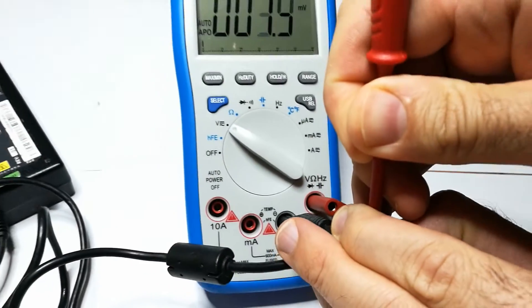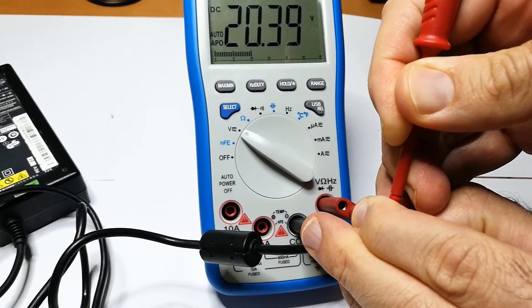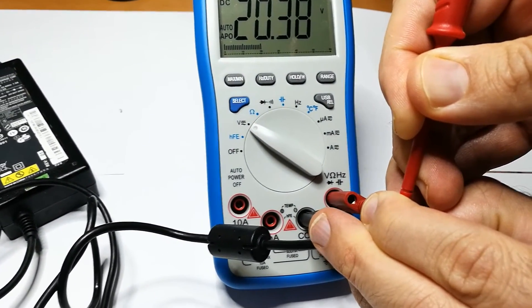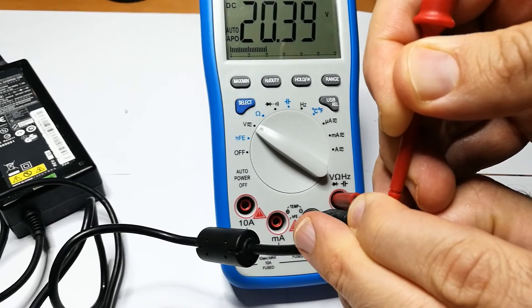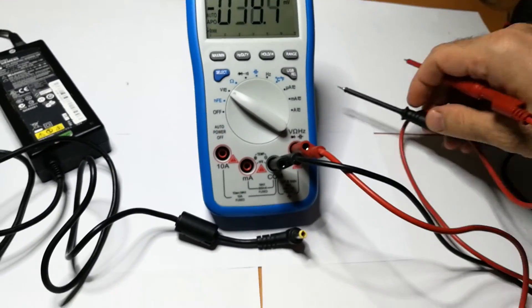Now you can measure the voltage, and as you can see there are 20.39 volts. This means that my AC adapter works fine. That's all, I hope you learned something.